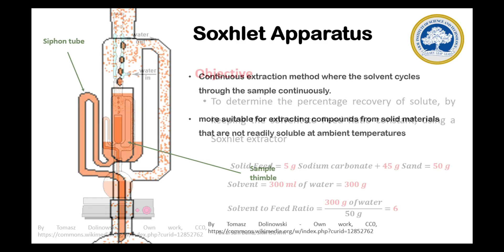The amount of sodium carbonate in these solutions is analyzed by titrating against 0.1 normal HCl using methyl orange as indicator. To perform this, 10 ml of sample is taken from the round bottom flask and made up to 100 ml by diluting with water. From this made-up volume of 100 ml, 10 ml is taken for titration. The same process is repeated for samples collected at the end of stage 1, stage 2, and stage 3.